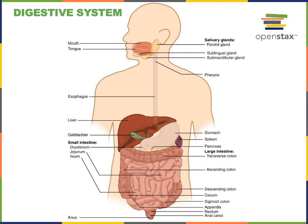The jejunum is the long middle segment of the small intestine and is the location where the majority of nutrient absorption occurs. The jejunum has a highly folded surface to increase its surface area. There are large folds called the plica circularis, with smaller folds called the villi on top of the plica, and then microscopic folds of the plasma membrane of the lining cells called microvilli. This system of folds on top of folds creates an extremely large surface area in the jejunum for nutrient absorption.